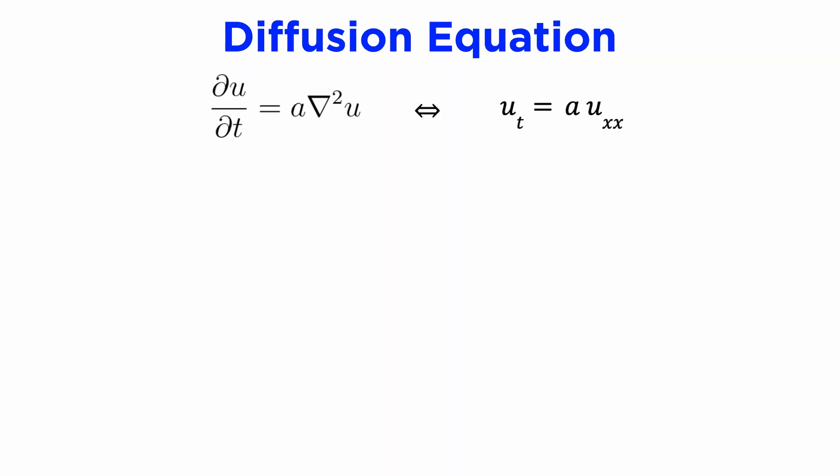The diffusion equation has the general form partial u partial t equals a times the Laplacian of u, where a is a positive constant. This equation describes systems that generally tend to spread out over time.